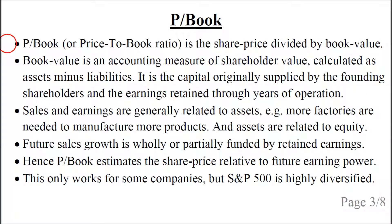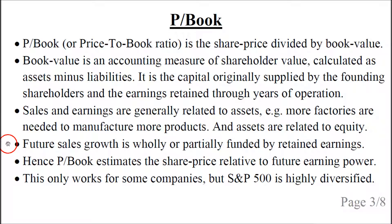Price-to-book ratio is defined as a share price divided by the book value. The book value is an accounting measure of shareholder value, calculated as assets minus liabilities. It is the capital originally supplied by the founding shareholders and the earnings retained through years of operation. Sales and earnings are generally related to assets — for example, we need more factories to make more products — and the assets are related to the equity because we need a stable capital structure without too much risk of bankruptcy.